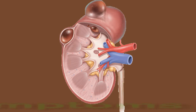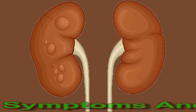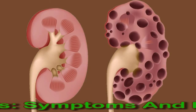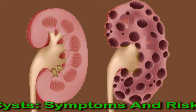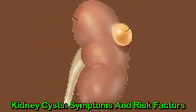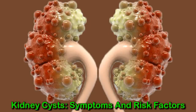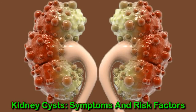Kidney cyst symptoms and risk factors. The kidneys are two bean-shaped organs located behind the abdominal organs and just under the rib cage. The kidneys filter waste from the blood before it is passed out of the body as urine. They are also vital in regulating blood pressure and managing many other important functions in the body.